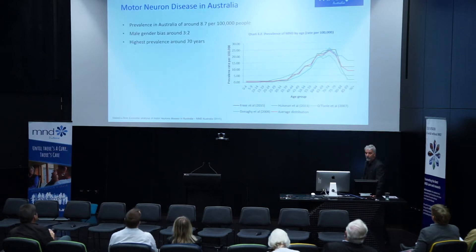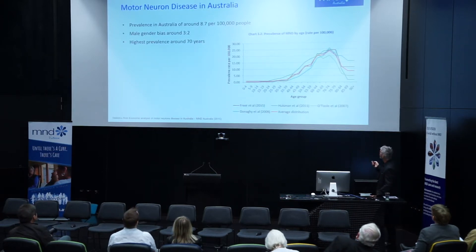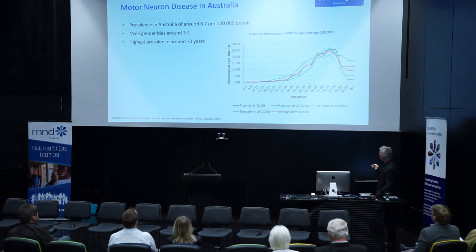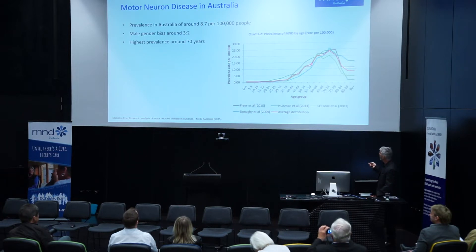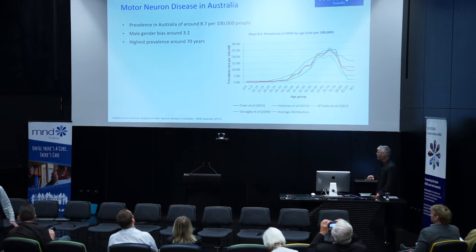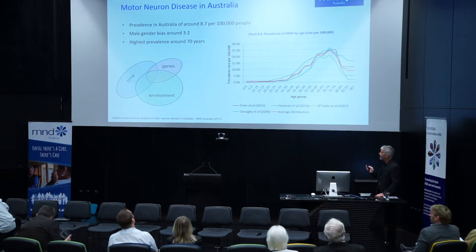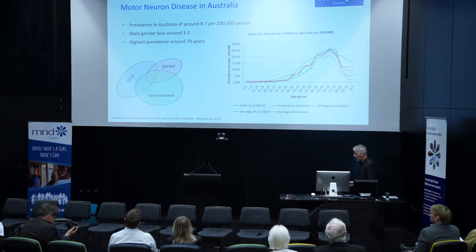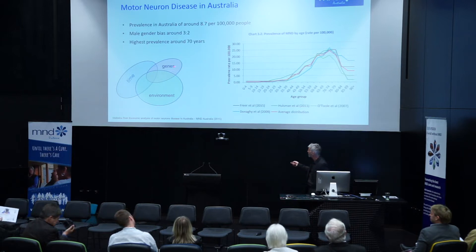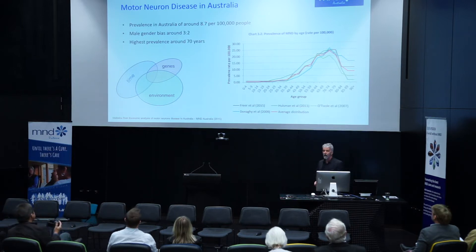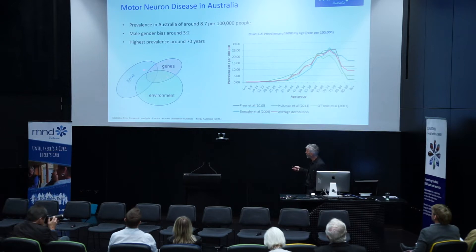If we look around the MND Australia website, we find a graph showing that the highest prevalence is around age 70. There's not much MND in early years, and then it increases and peaks around 70. So that's telling us one other thing about MND: time is a factor. We can now have a model where genes, time, and environment are interacting — maybe it's genes and time, maybe genes, environment, and time, or maybe environment and time.